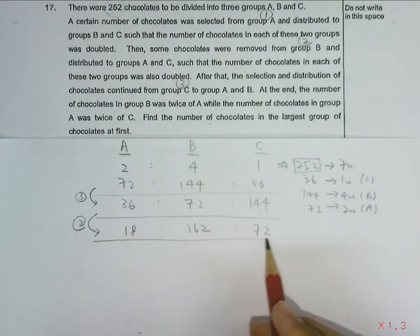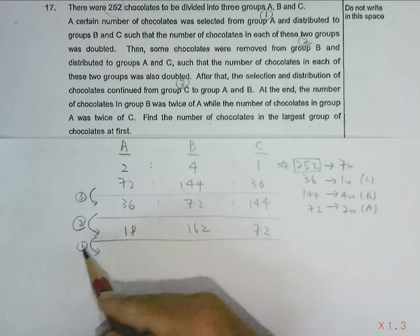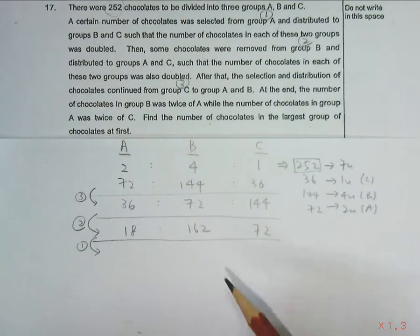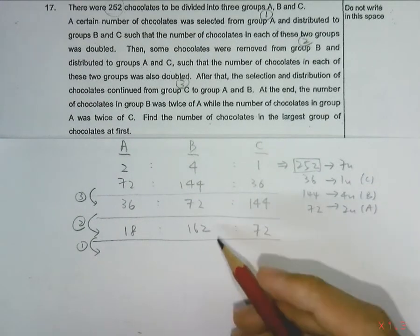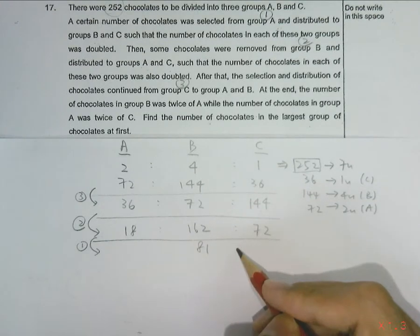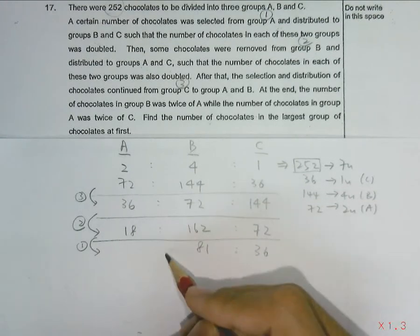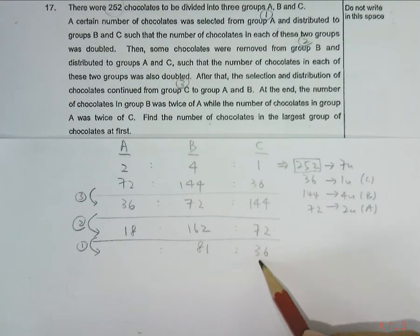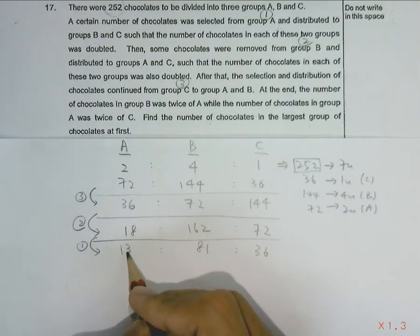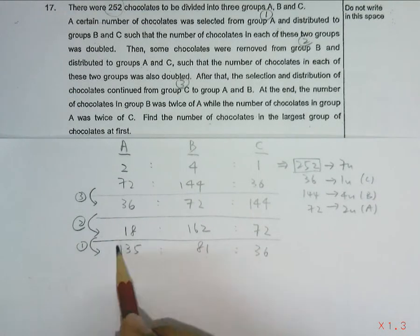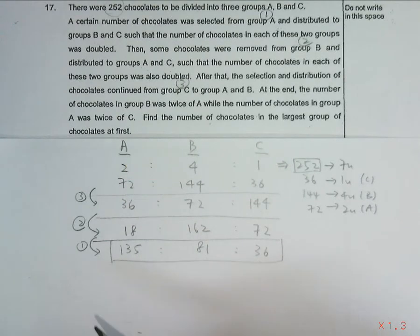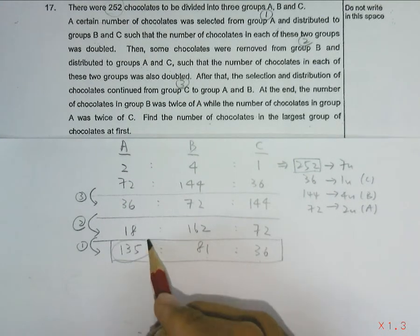Now we have to move one more step backwards to the first step, where chocolates were taken from group A and given to groups B and C. Since group B and C number of chocolates were doubled, we will have to half it now. So half of 162 will be 81 and half of 72 will be 36. Since the total number of chocolates here will have to equal 252, we can subtract 81 and 36 from 252 to obtain 135. So this is the number of chocolates they started off with. The question asks to find the number of chocolates in the largest group at first. The largest group here will be group A, which has 135. So this will be your answer.